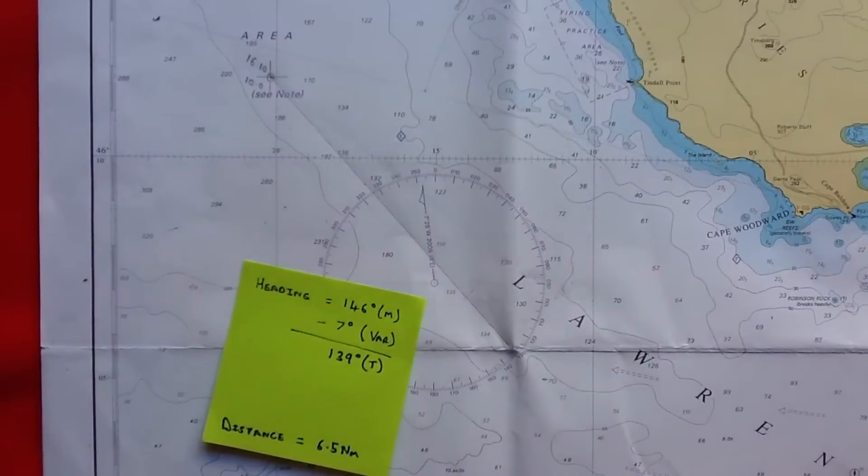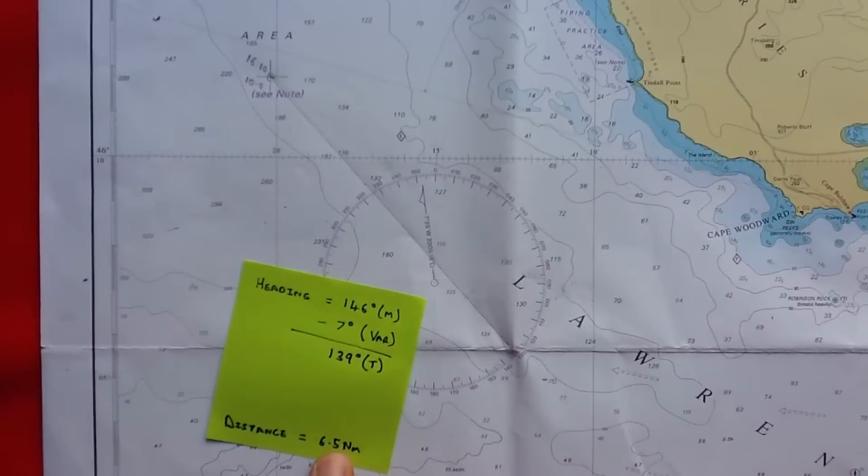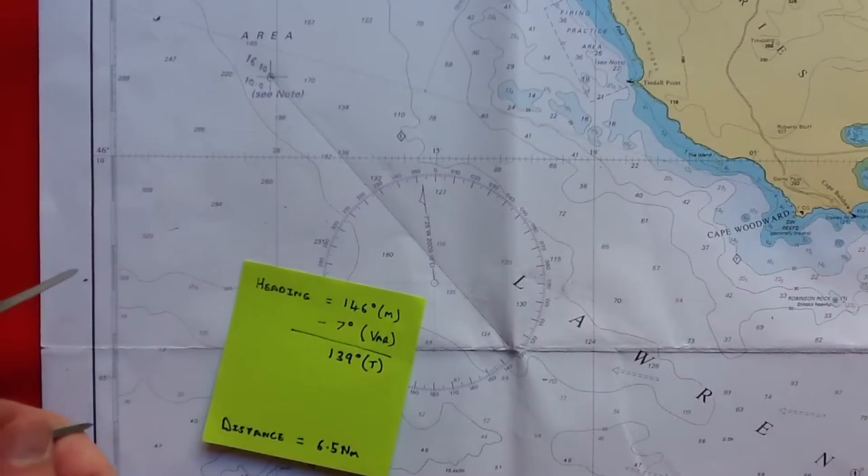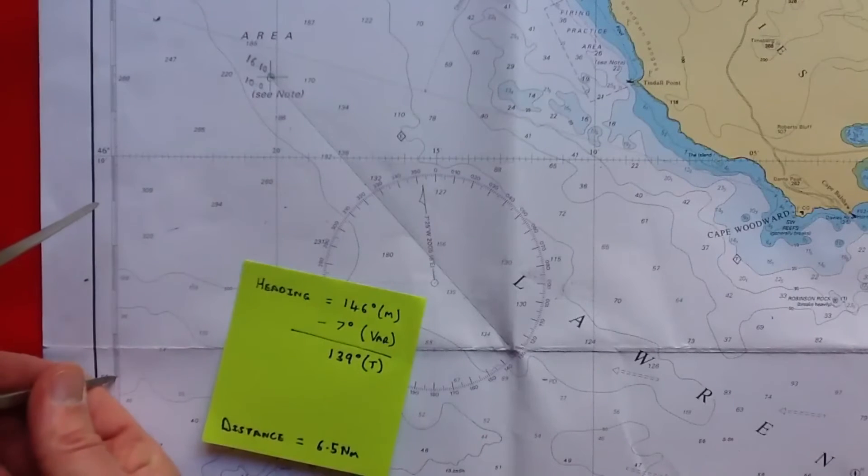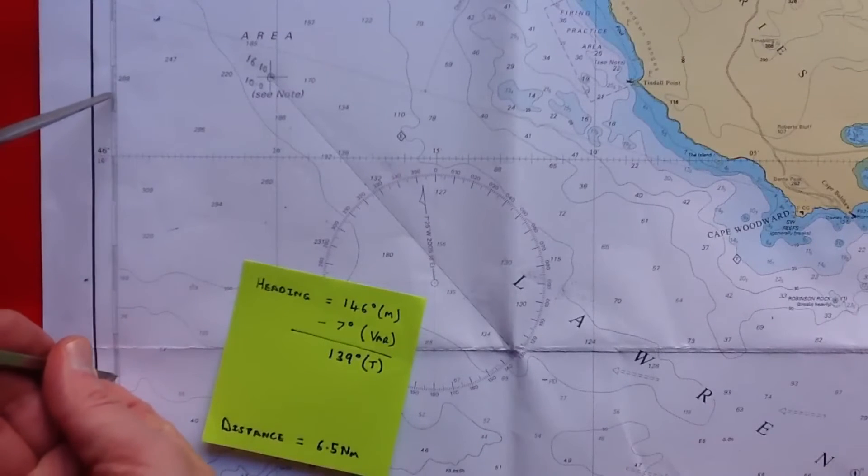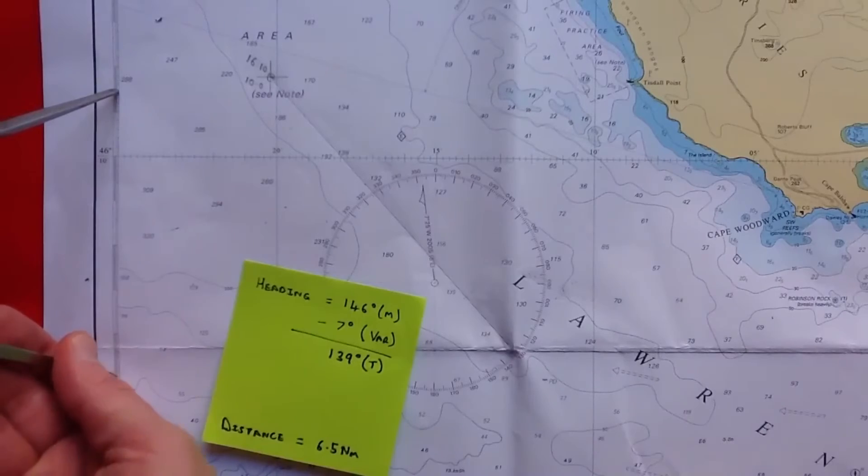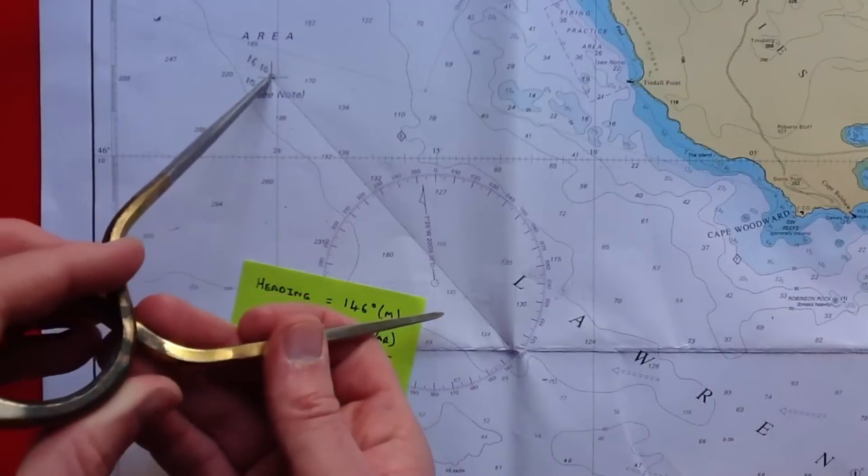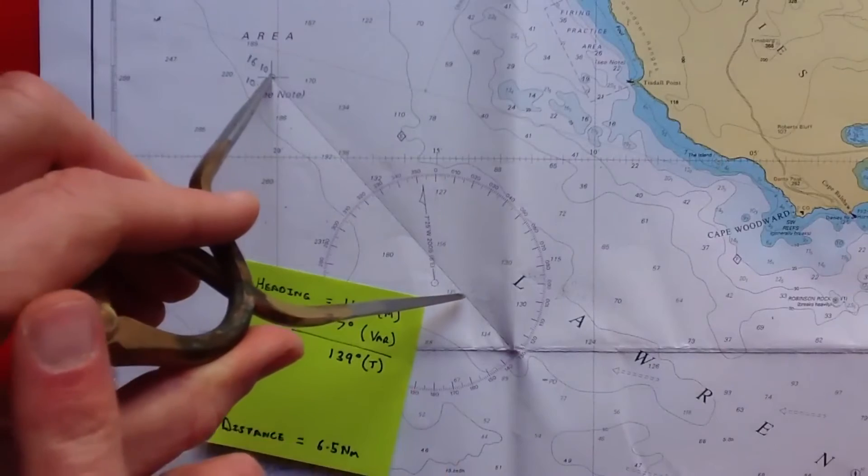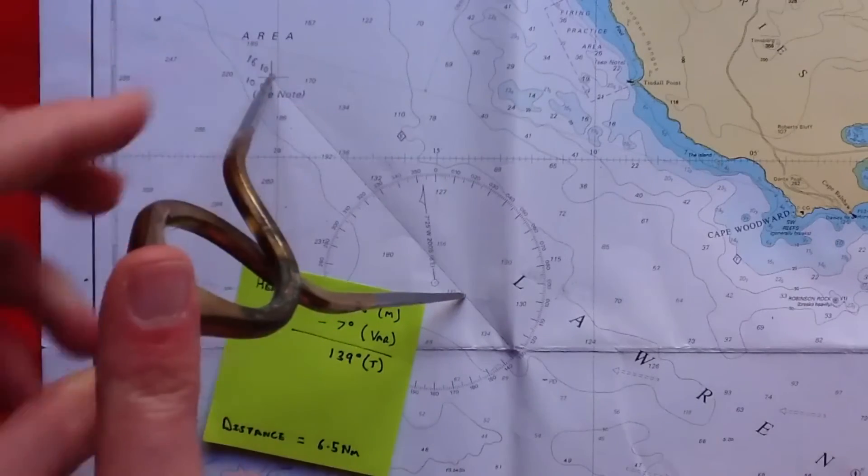The other bit of information we need to know is how far we've travelled. That was 6.5 nautical miles. So using our dividers we measure 6.5 nautical miles. Put one end of the dividers on our start location and the other along the line.